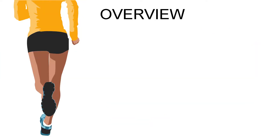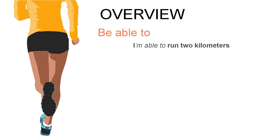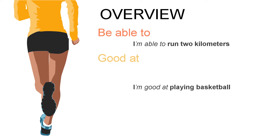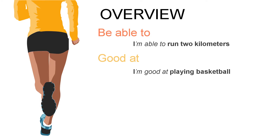An overview of this module covers how to use BE ABLE TO — for example, in a sentence: 'I'm able to run 2 km.' It also covers how to use GOOD AT — for example, 'I'm good at playing basketball.'